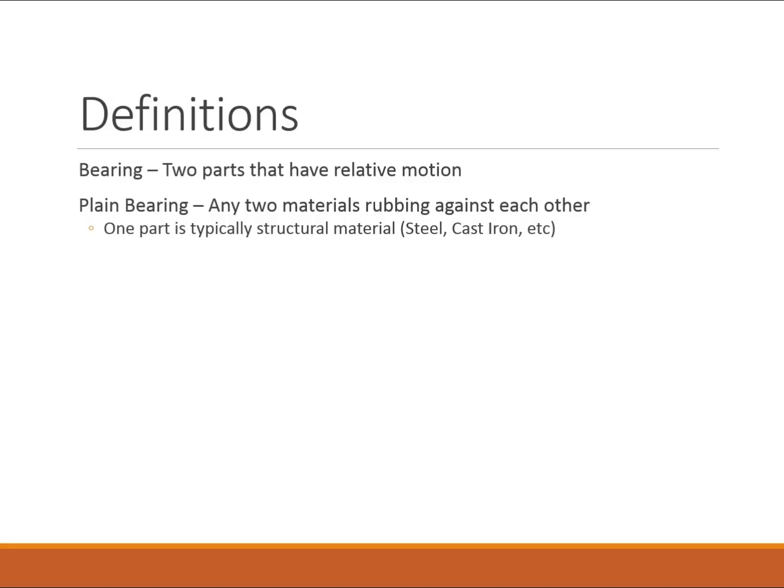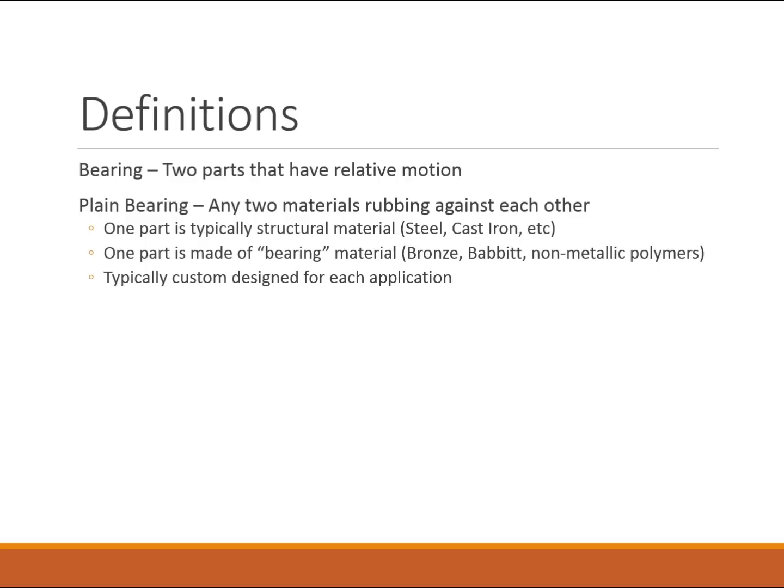The first category is a plane bearing. A plane bearing has two materials that rub directly against each other. Typically one part is a structural material like steel or cast iron, and the other part is a bearing material — something that won't wear out and has very low friction. Bronze is a good example, or there's a material called Babbitt that has tin or lead infused in it that makes it very slippery with a low coefficient of friction.